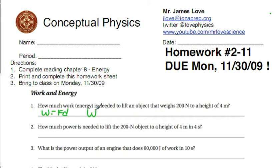So in order to find the work, you multiply 200 newtons times the distance which is 4 meters. And that gives you an answer of 800 newton meters or joules if you know that unit.